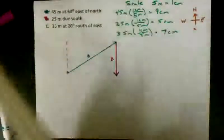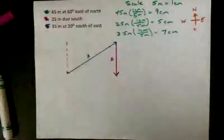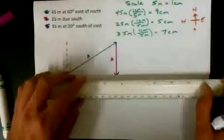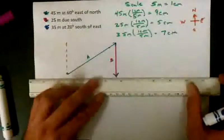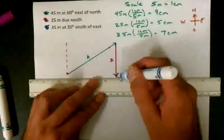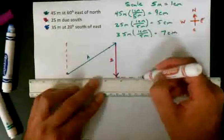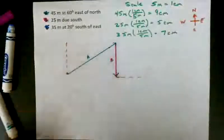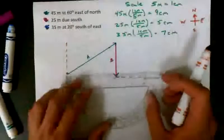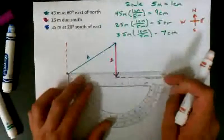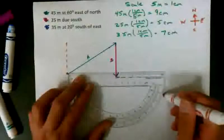Vector C now is 7 centimeters at 20 degrees south of east. So the first thing I'll have to draw in is an east line. I'll hold my protractor with zero degrees on east, and I have to be 20 degrees south of that.